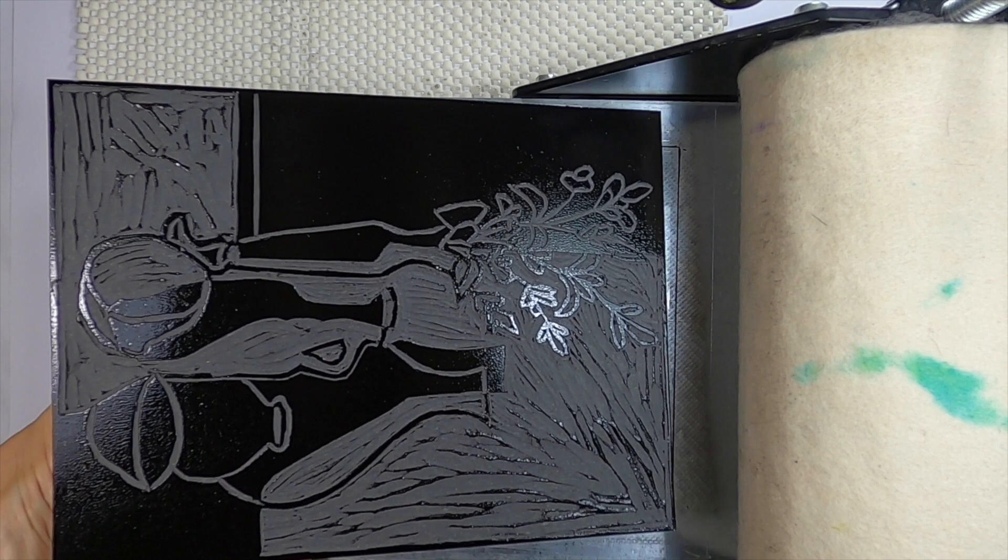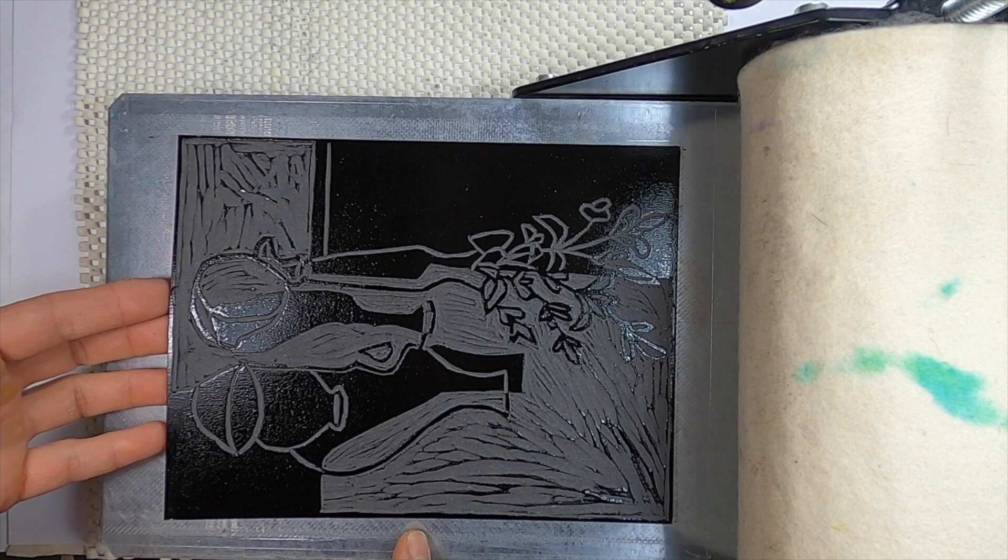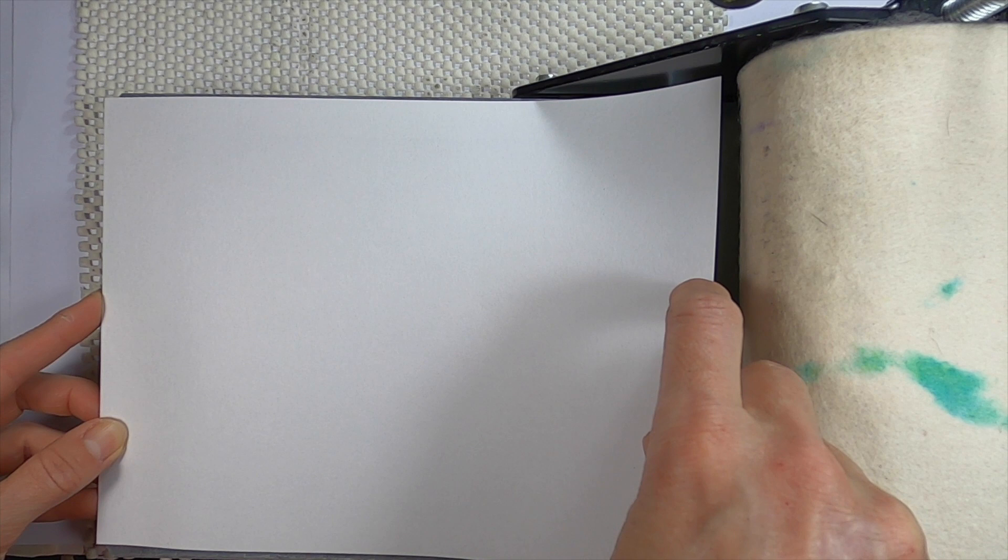To print the lino, place it on the etching press bed with the ink side up. Line up a clean sheet of paper on top and roll it through. You may need to do a few tests to work out the right pressure setting for your press. Not enough pressure and the black will be faded and patchy. Too much pressure and the ink will bleed and you'll lose the crisp cut edges.